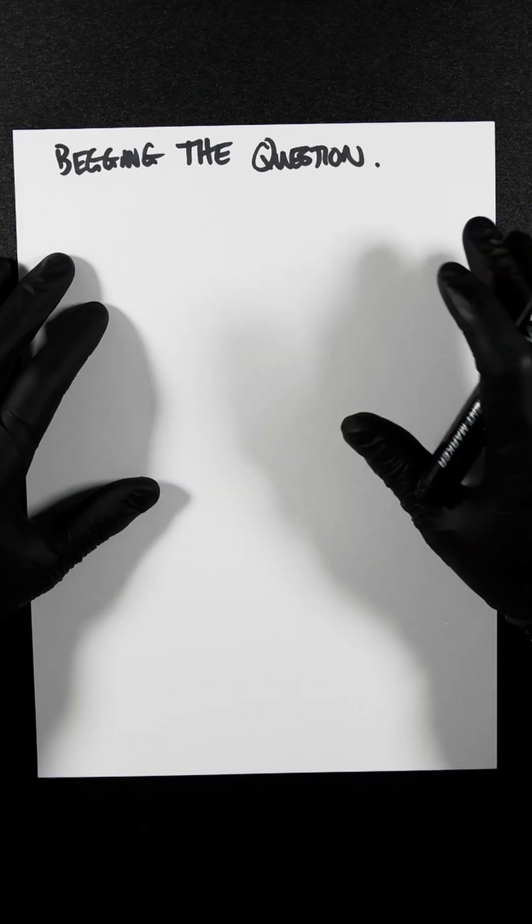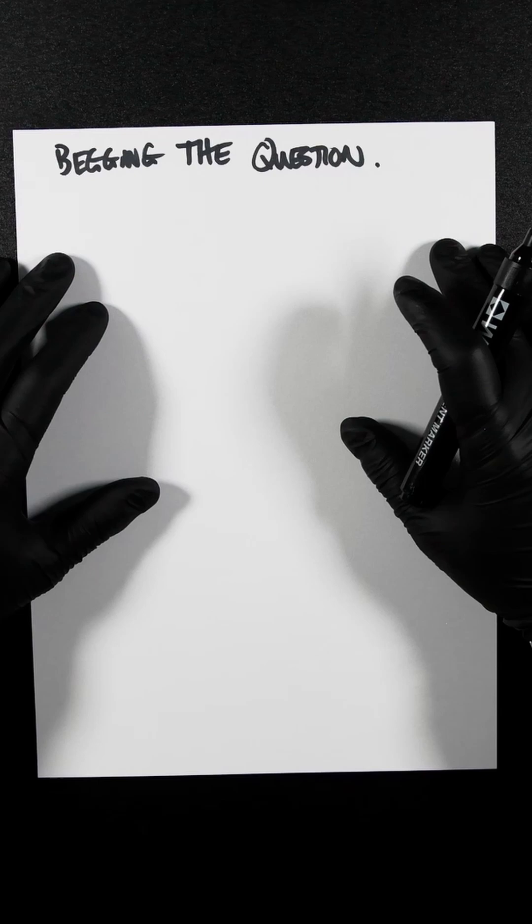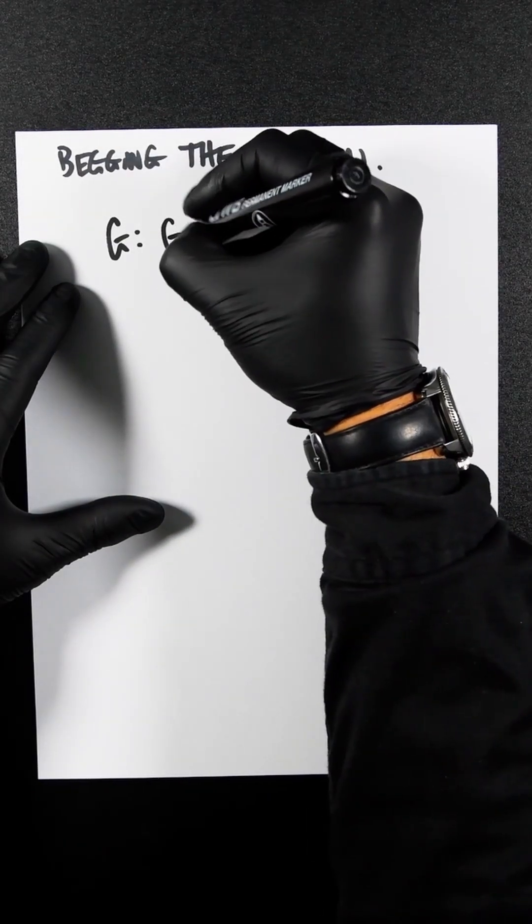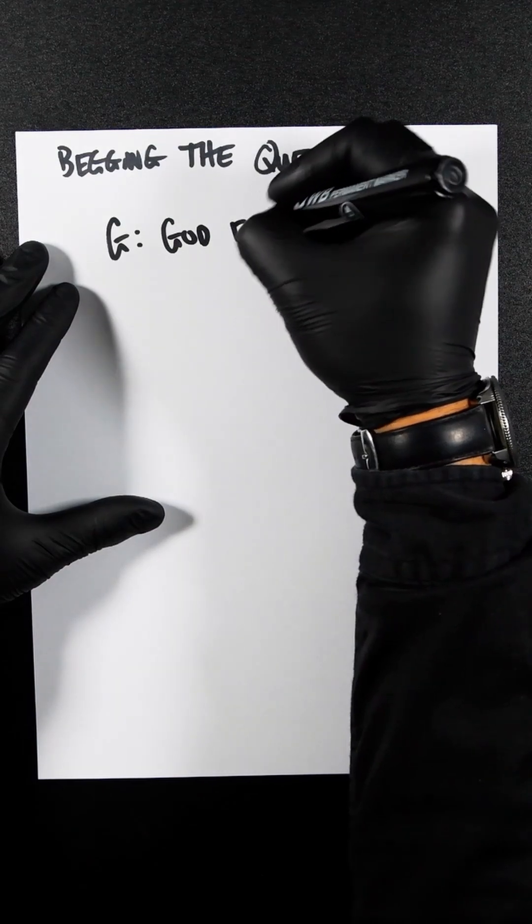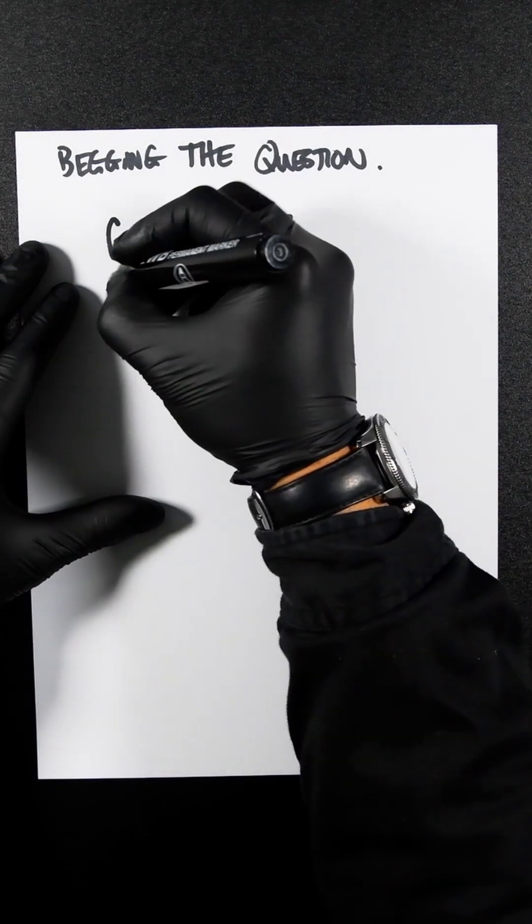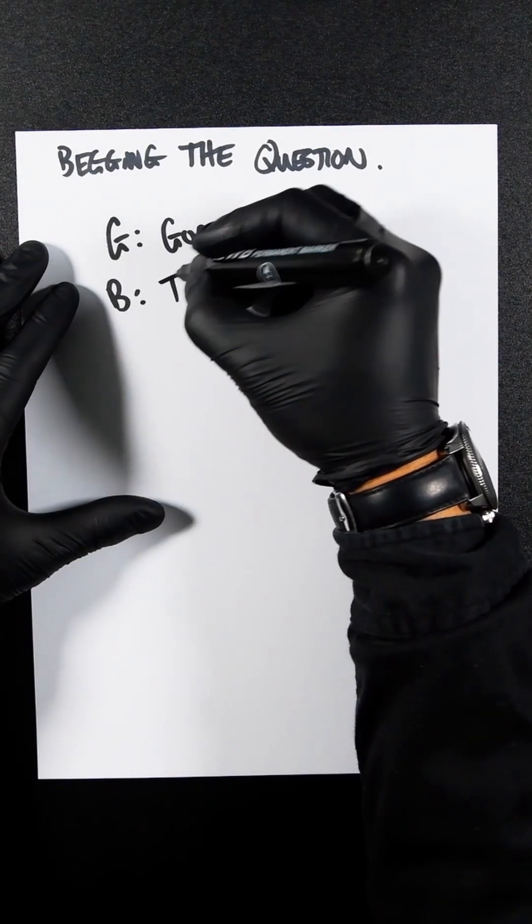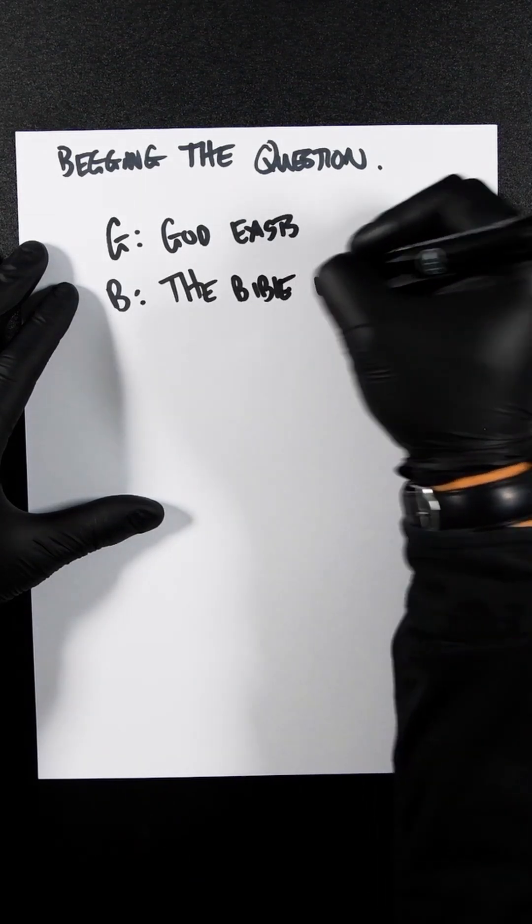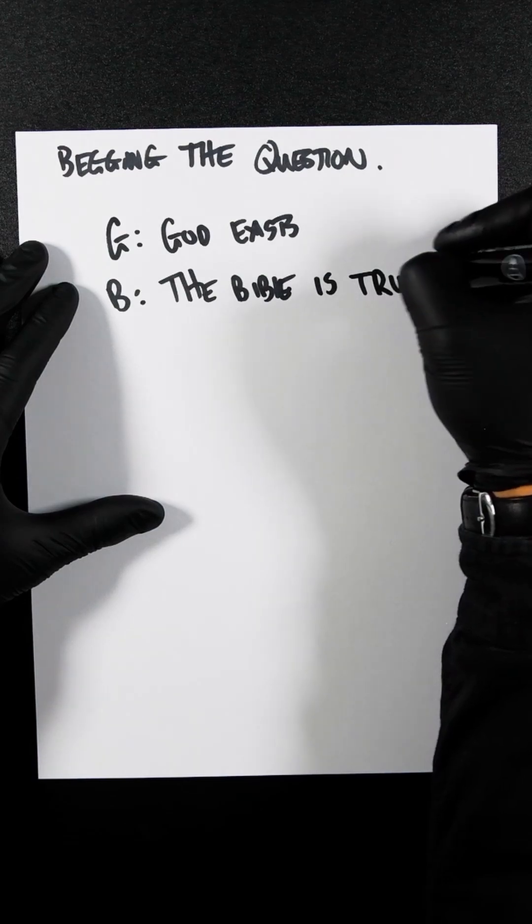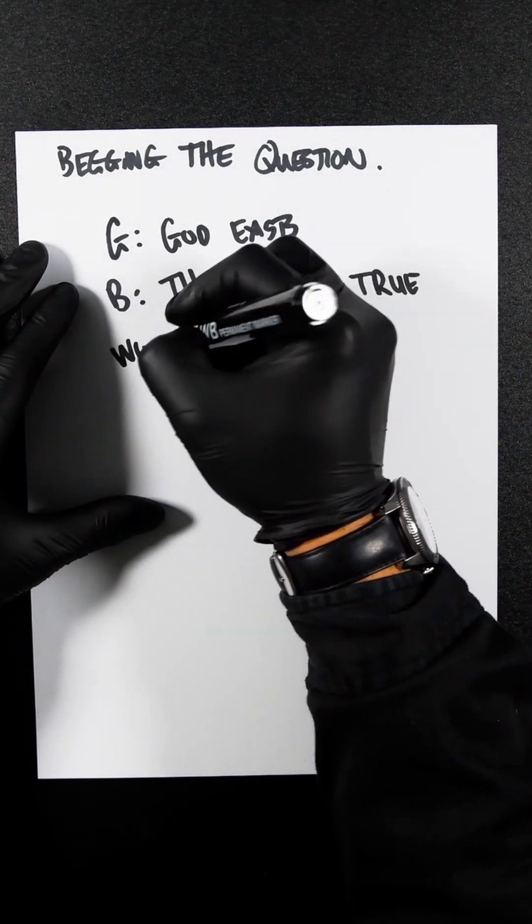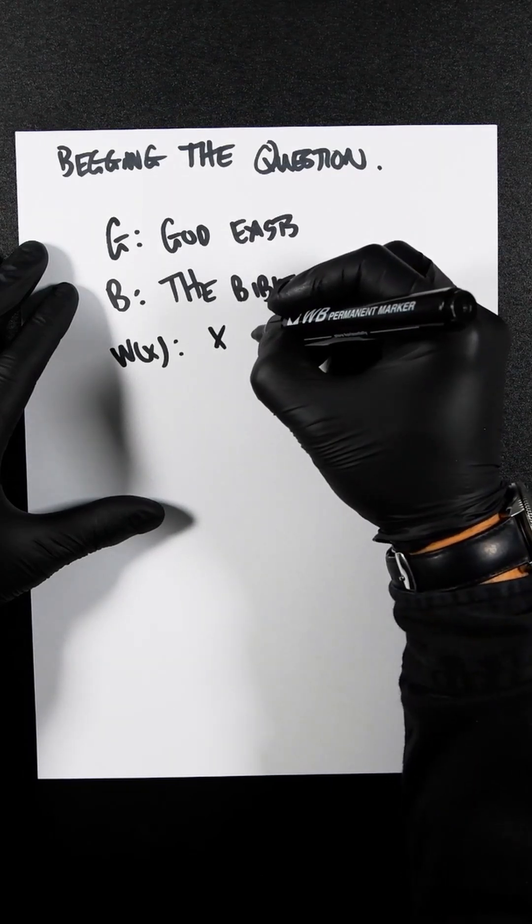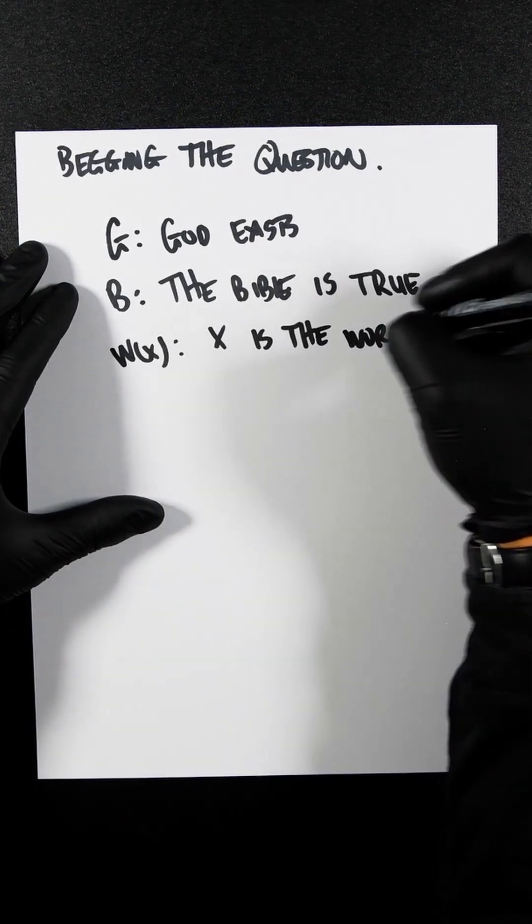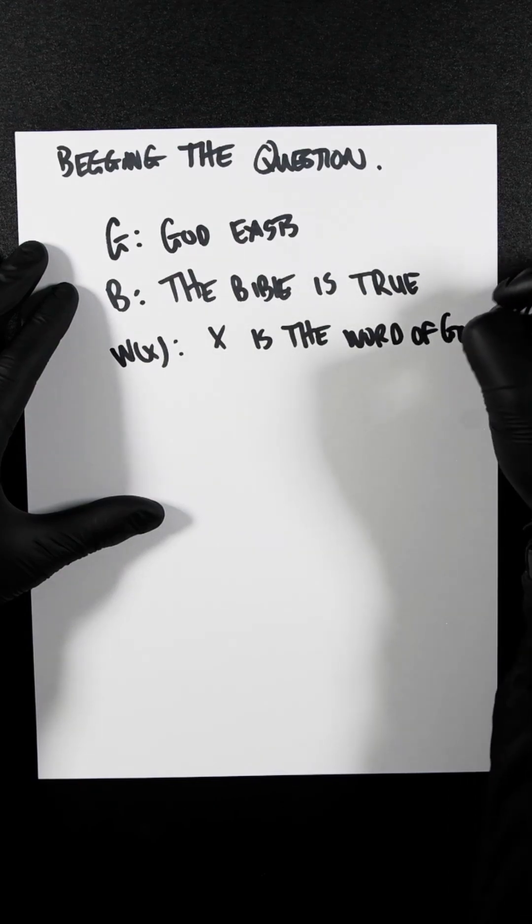which makes the argument circular and invalid for proving the conclusion. So let's say we have G, which is God exists, and we have B, where the Bible is true, and then we have W(X), where X is the word of God.